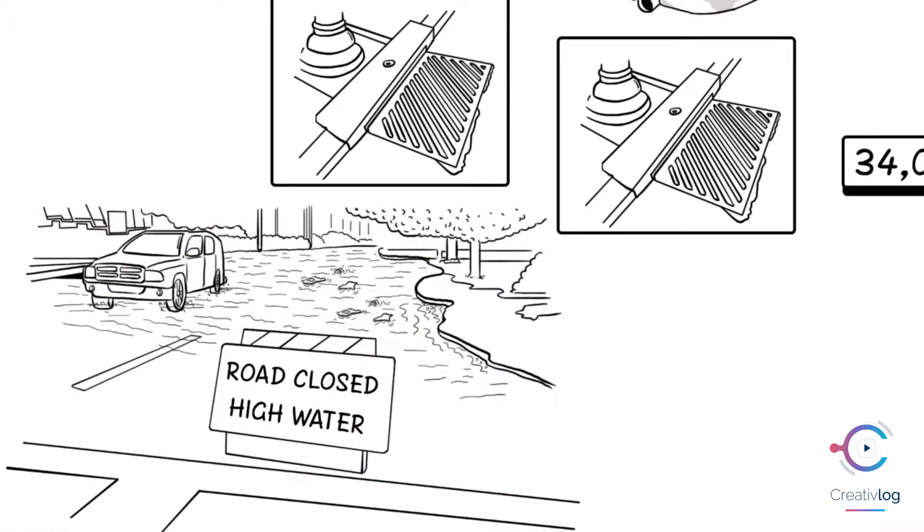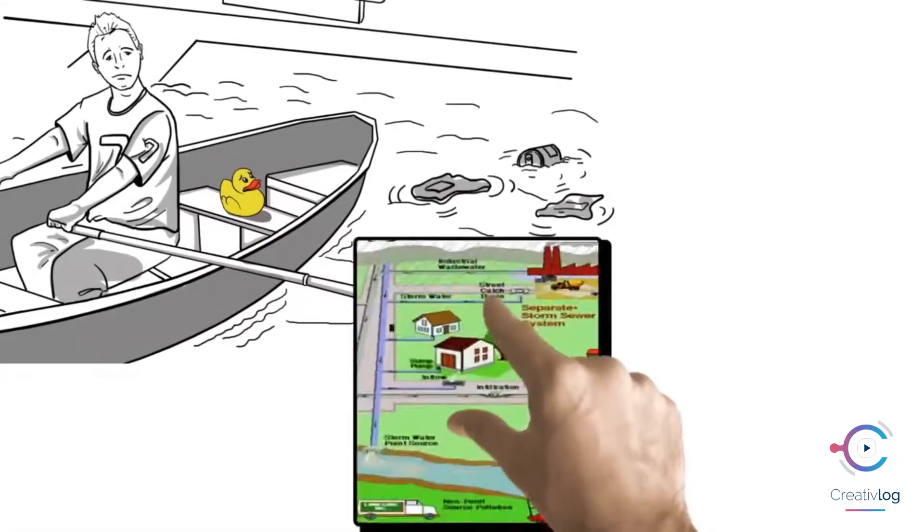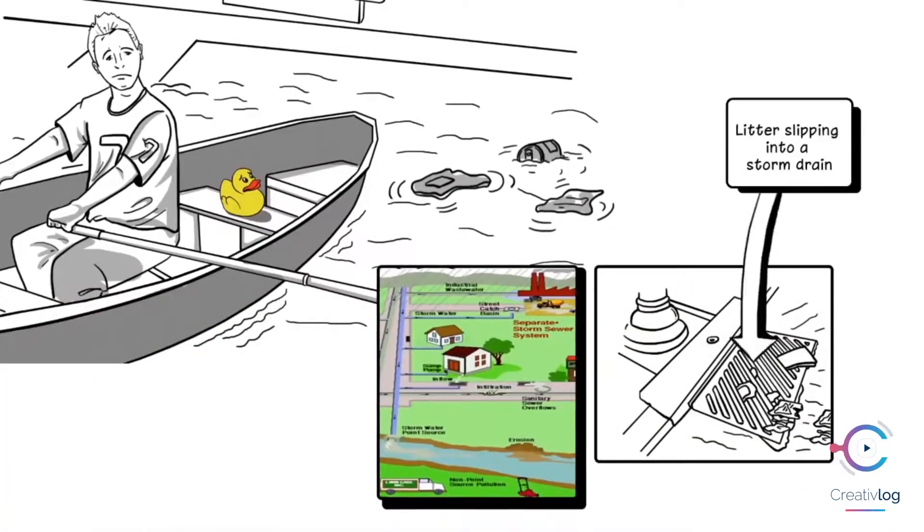Even organic materials, like fruit, can remain intact for up to two years. And the storm drain is only the beginning of your litter's journey. Once it slips through, it's a straight shot right into our waterways.